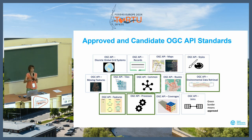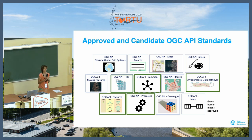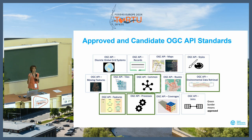There are many OGC APIs. Each one is targeted at a particular type of geospatial data. So if you are interested in moving features, there's an OGC API to tackle that, or if you are interested in coverages, there's another OGC API, and so on. They are in different stages of development. The ones shown in solid green are the ones that already had at least one part approved.